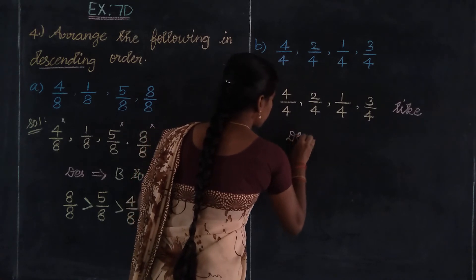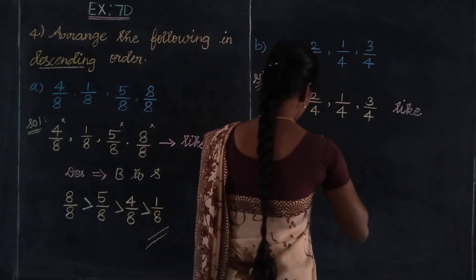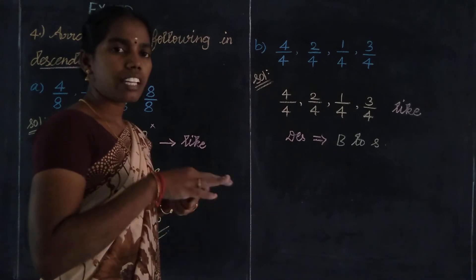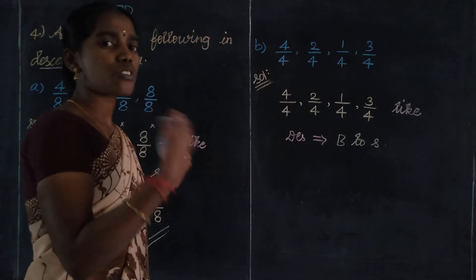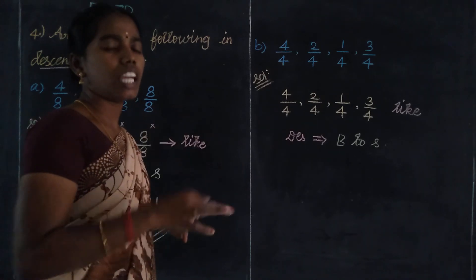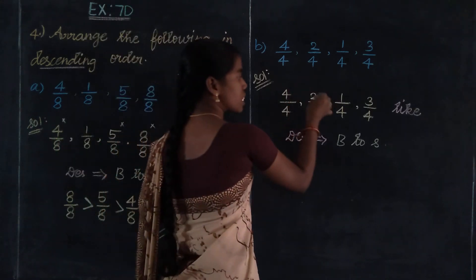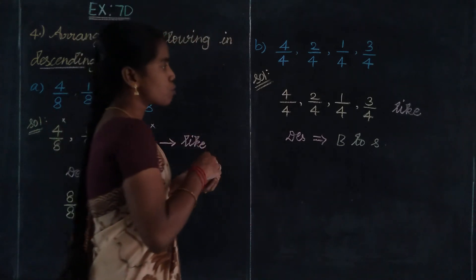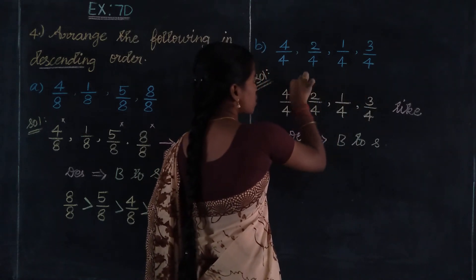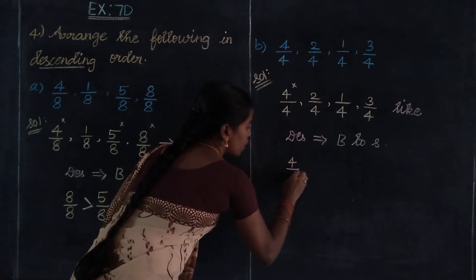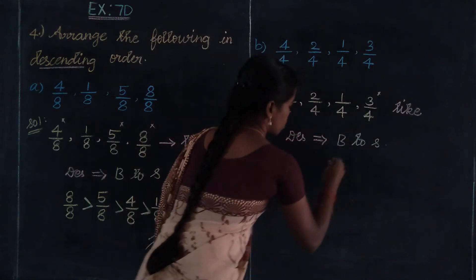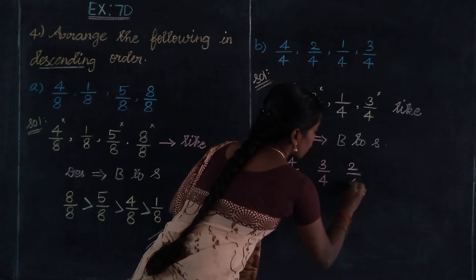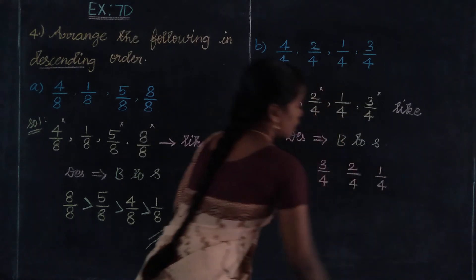Biggest value to smallest value. Denominator is equal, so the base point is the numerator. Which one is the biggest? In descending order, starting value is the biggest. Numerators are 4, 2, 1, 3. The biggest one is 4, so 4 divided by 4 is first. Next biggest value is 3, so 3 by 4. Then another biggest value is 2 by 4. The last remaining is 1 by 4.